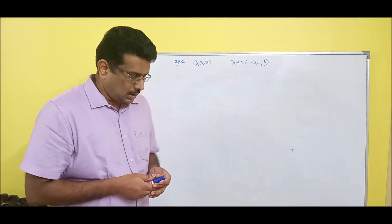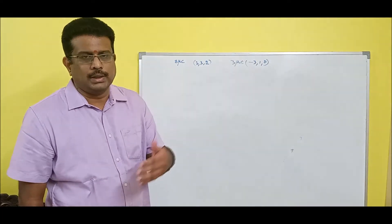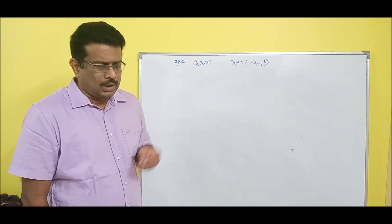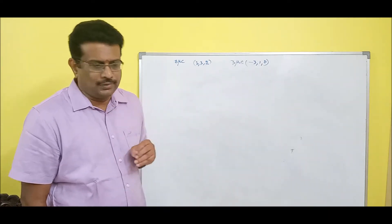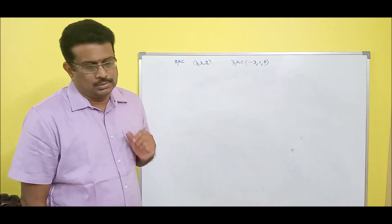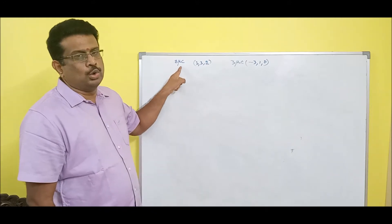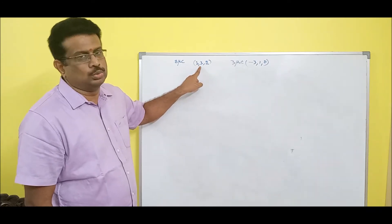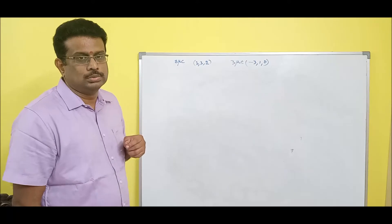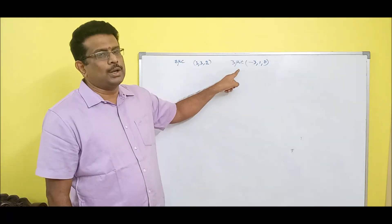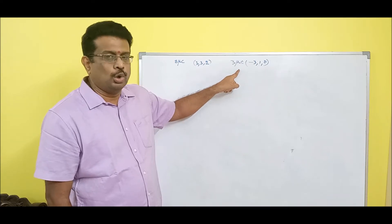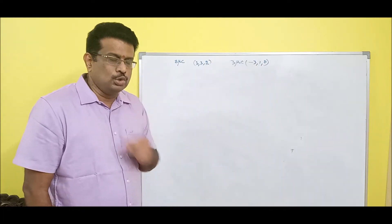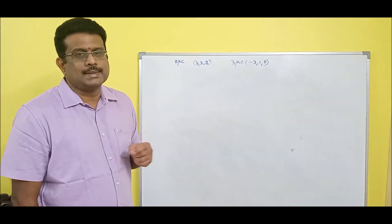Welcome back. We had Coulomb's formula in the last video lecture. Now I wanted to do a simple problem on Coulomb's law. Calculate the force on 8 micro coulomb located at (3,3,2) due to another charge 3 micro coulomb located at (-3,1,0). Assume medium is free space.